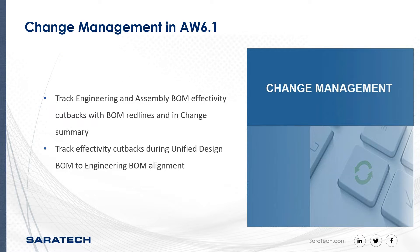So what is new in chain management? With Active Workspace 6.1, the tracking of an e-BOM and assembly BOM effectivity cutback helps you to cut back the effectivity range of the original part so that it does not overlap with the effectivity range of the new or replacing part. You can also see that the system tracks the effectivity cutback when you align the unified design BOM to an engineering BOM.